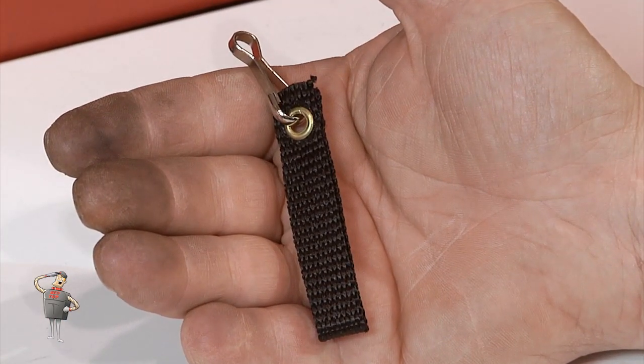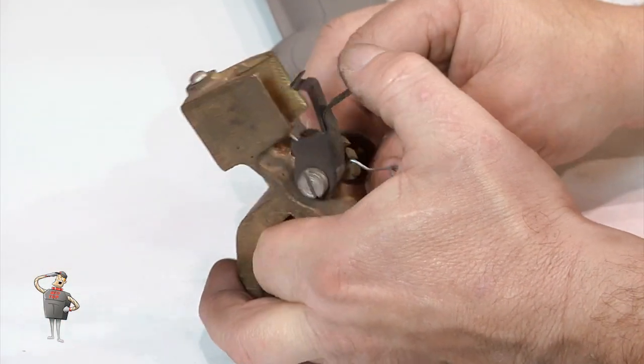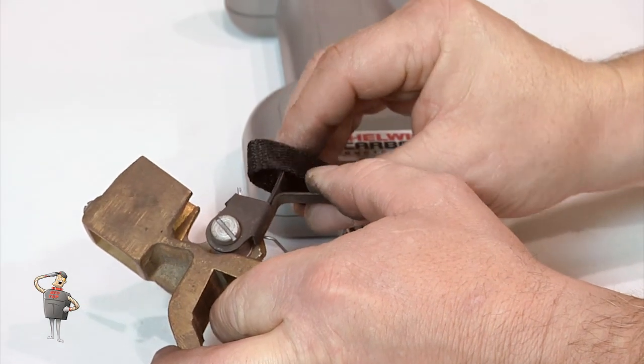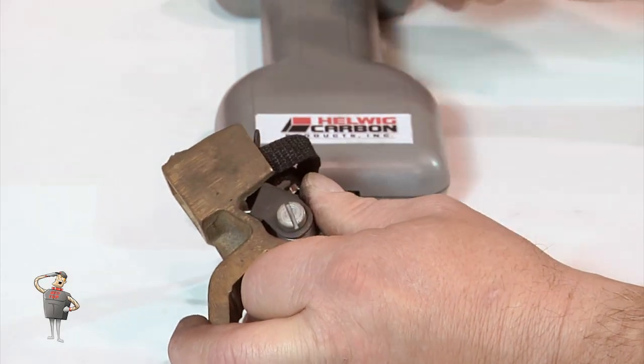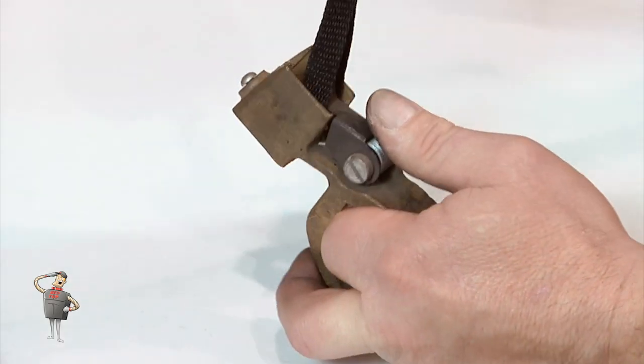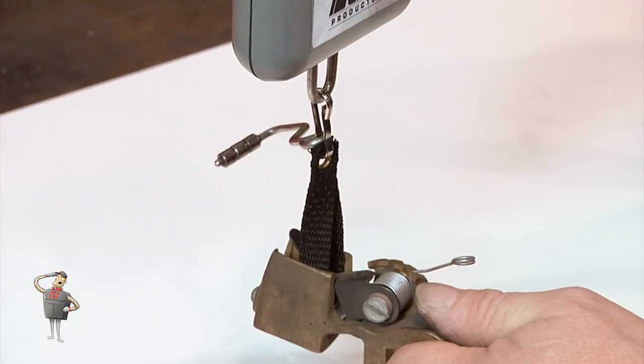Then use the leather strap and loop over the end of the spring finger. Now, pull all the way up to uncoil the spring.